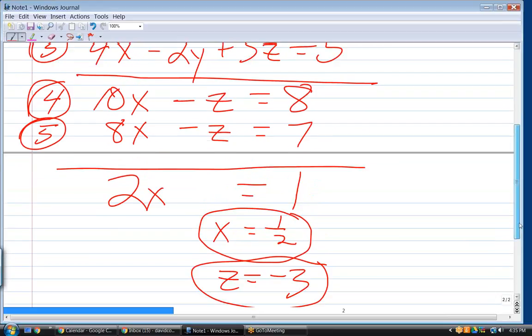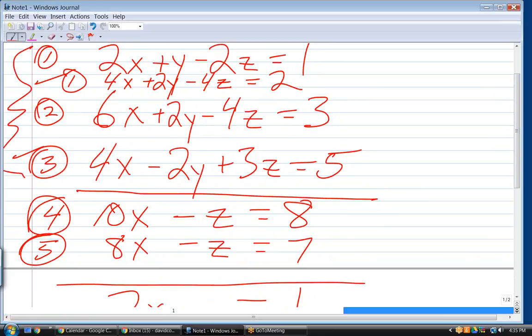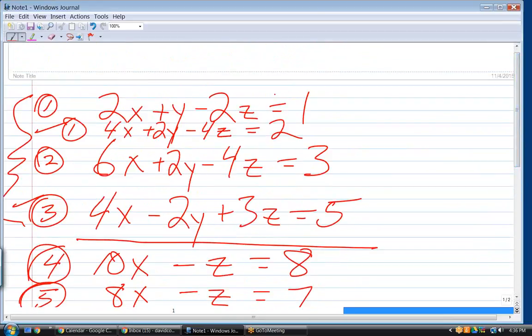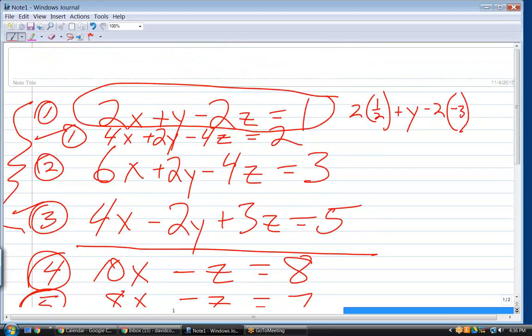And now, to get y, I go back into any of the equations of the first three that have all three variables. And I can use the simplest one there is. To me, that looks like equation 1. So, let's solve for, what am I solving for? Y. And x was 1 half. So, if I use this equation right there, I get 2 times 1 half plus y minus 2 times negative 3 equals 1. So, now I have 1 plus y plus 6 equals 1. I get y equal minus 6. And there's my three solutions.